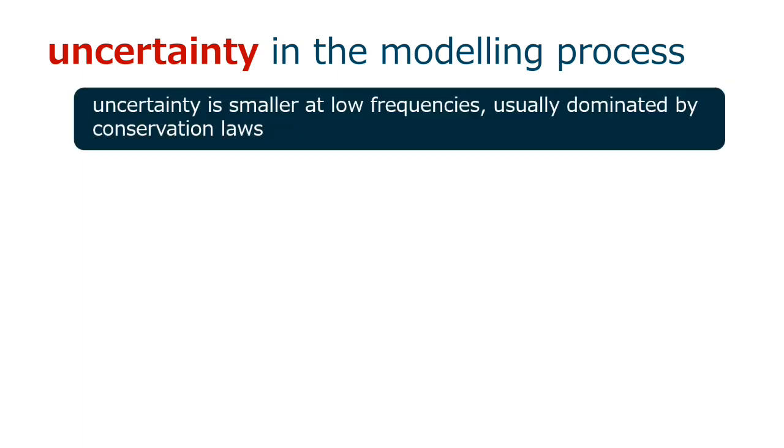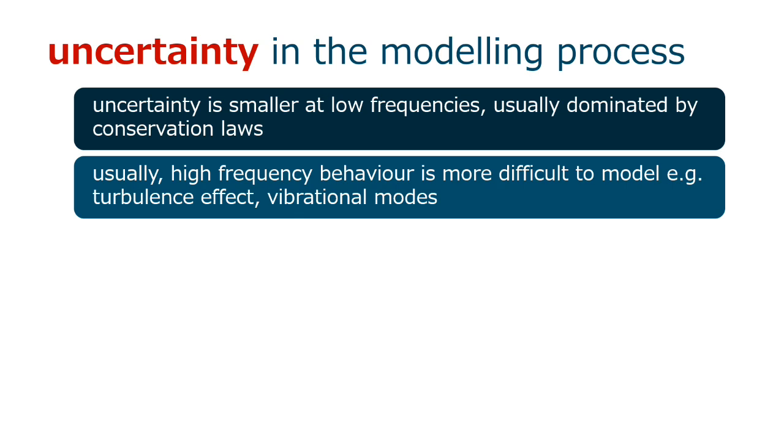Uncertainty is smaller at low frequencies, usually dominated by conservation laws. Usually, high frequency behavior is more difficult to model. For instance, turbulence effect, vibrational modes.